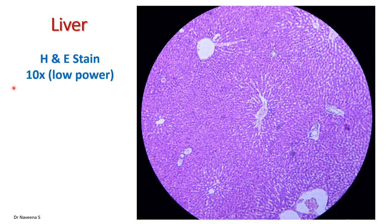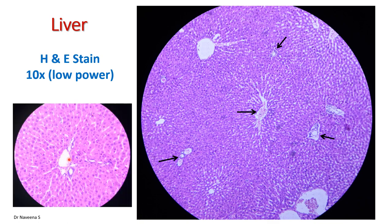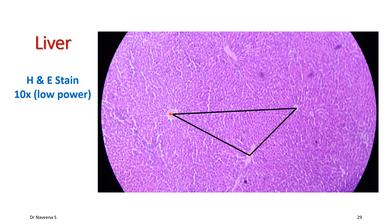Looking at the liver tissue under low power with hematoxylin and eosin stain, we can see the central vein with radiating hepatocytes and sinusoids, and portal triads showing a portion of the classical lobule. Under high power, portal triad structures are identified: a larger-lumened portal venule, a thick eosin-stained hepatic arteriole, and a cuboidal-epithelium-lined bile ductule. The portal lobule can be identified by joining adjacent three central veins on the H&E stained tissue.